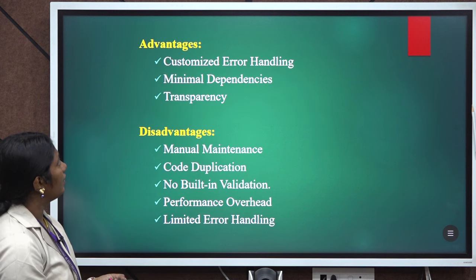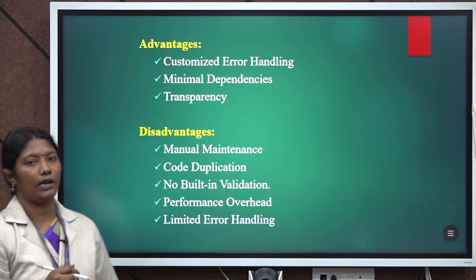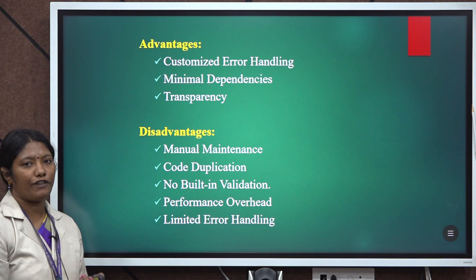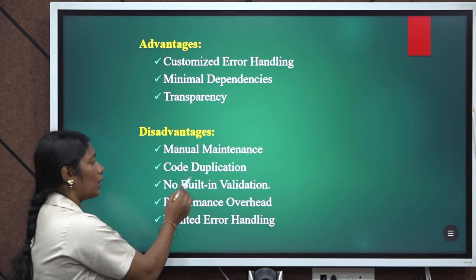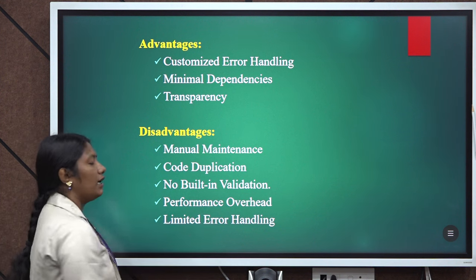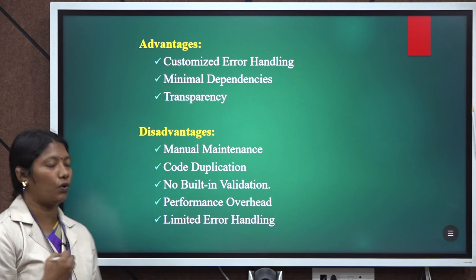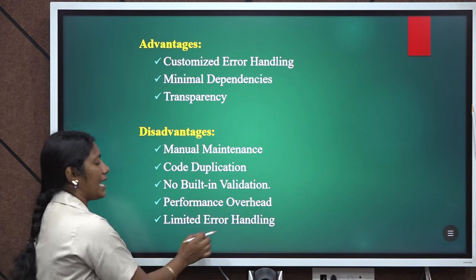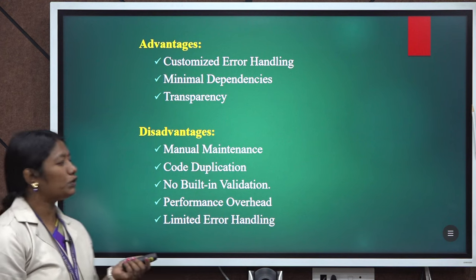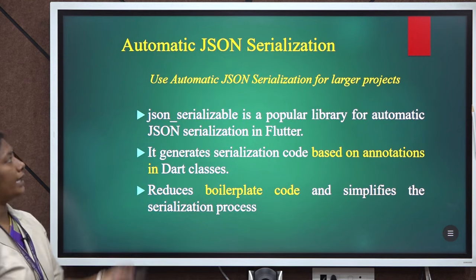The advantages of manual serialization are: no need to add any dependencies, customized error handling, and transparency. Disadvantages include: it is difficult to maintain manually, code duplication may occur, no built-in validations, performance overhead, and limited error handling. Manual serialization is most commonly used for smaller projects; for larger projects, we use automatic JSON serialization.